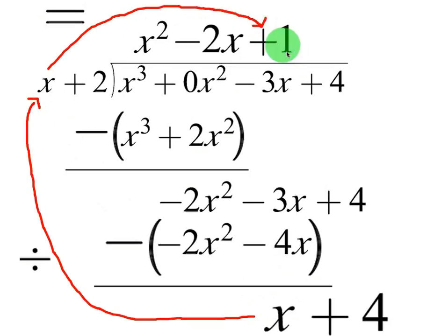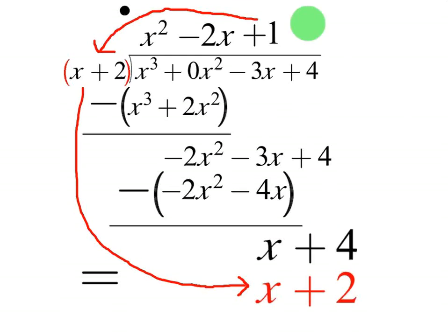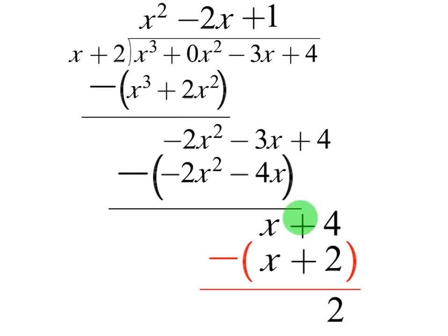So far we have x squared minus 2x plus 1 on top. We take that 1 and multiply by x plus 2: 1 times x is x, and 1 times 2 is 2. Now subtract — putting parentheses around it: x plus 4 minus x plus 2. The x minus x cancels, and 4 minus 2 is 2. So the remainder is 2.